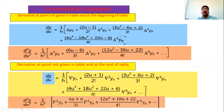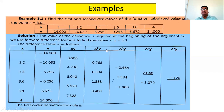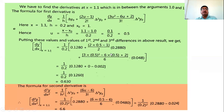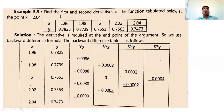If the point is not given in the table and is at the end of the table, use those two corresponding general formulas for first and second order derivatives. Now, Problem 3: find the first and second derivatives of the function tabulated at x = 2.04. Since 2.04 is given in the table and is at the end of the table, we use the backward difference formulas.